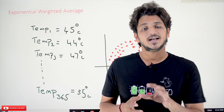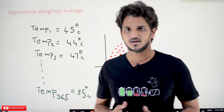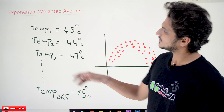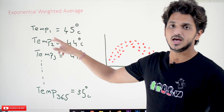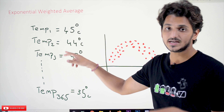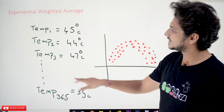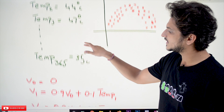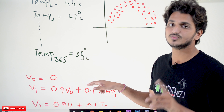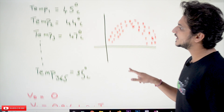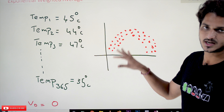Coming to today's class, let's take an example and understand what exponential weighted average means. The example dataset we consider here is temperature values collected for each day. Temp1 means day one temperature — 45 degrees centigrade; day two temperature — 44 degrees centigrade. We are collecting temperature values up to 365 days, meaning we are collecting values for one year. If you plot this data, it looks like this.